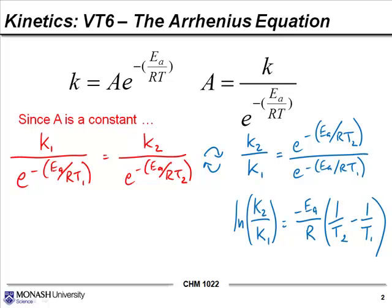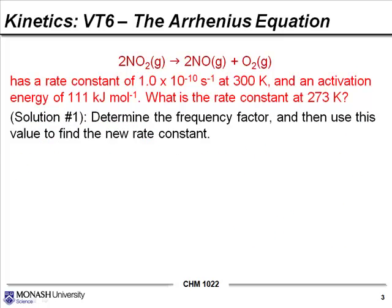What better way to think about that than to just do a quick sample problem? In this case, we've got a reaction where two moles of nitrogen dioxide dissociates into two moles of nitrogen oxide and one mole of oxygen gas. We're given some information: this reaction has a rate constant of 1.0 times 10 to the minus 10 seconds to the minus 1 at 300 Kelvin — note the temperature is very much in Kelvin. We also have an activation energy of 111 kilojoules per mole. What is the rate constant at 273 Kelvin?